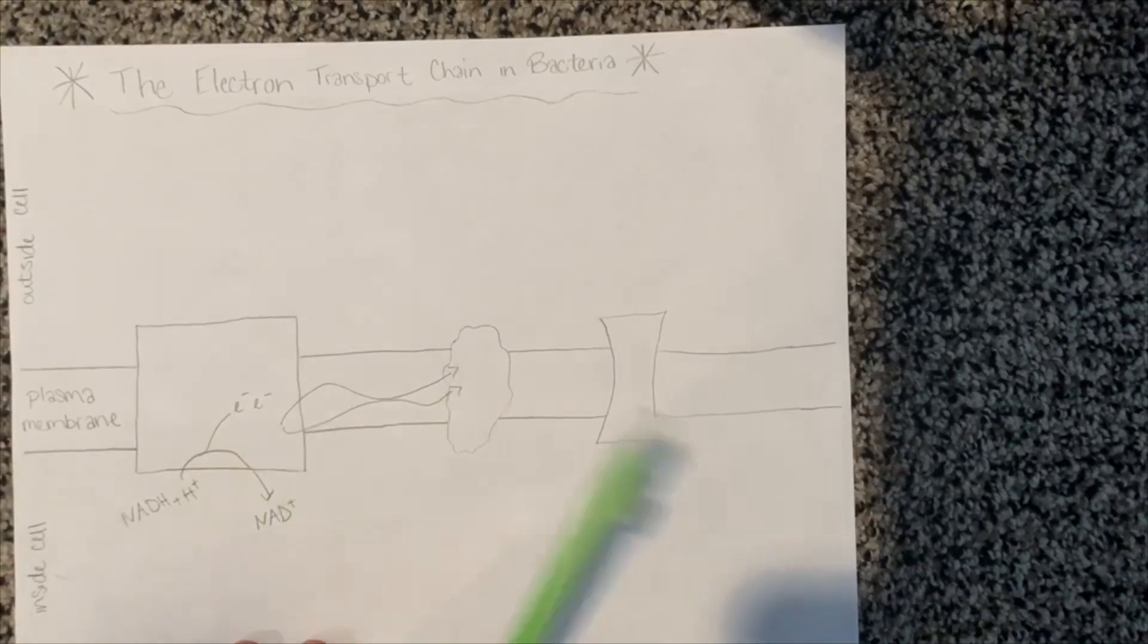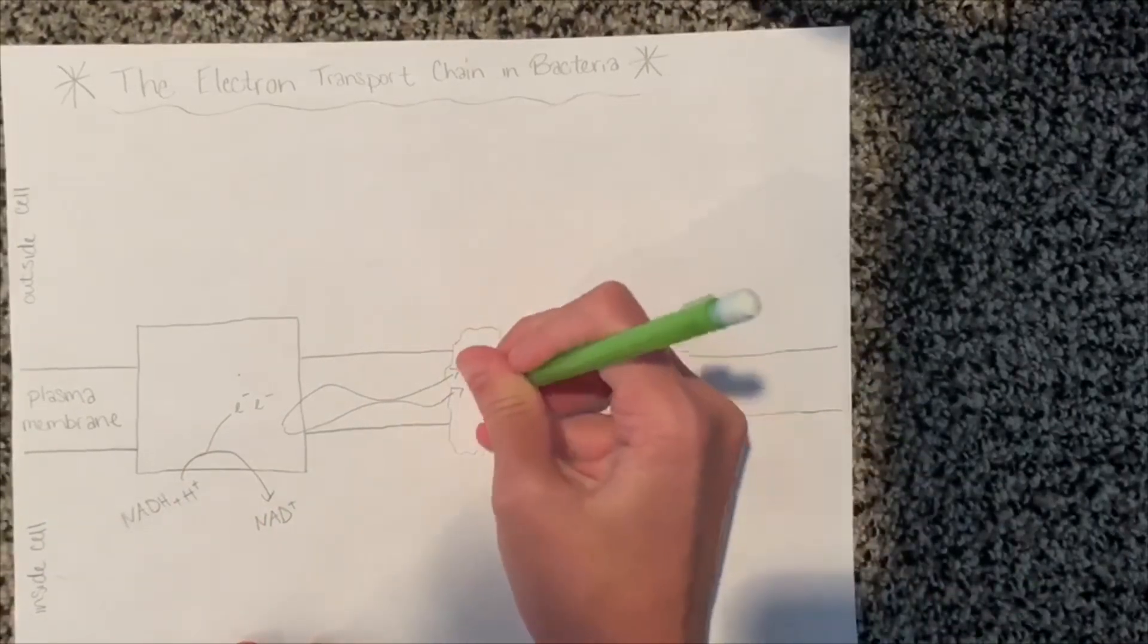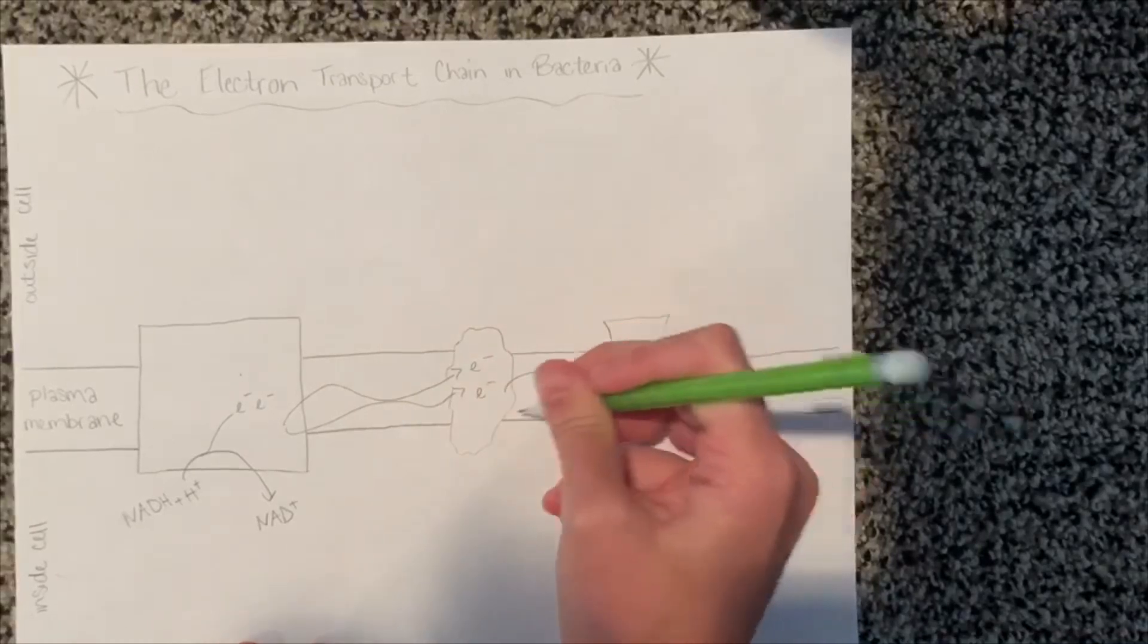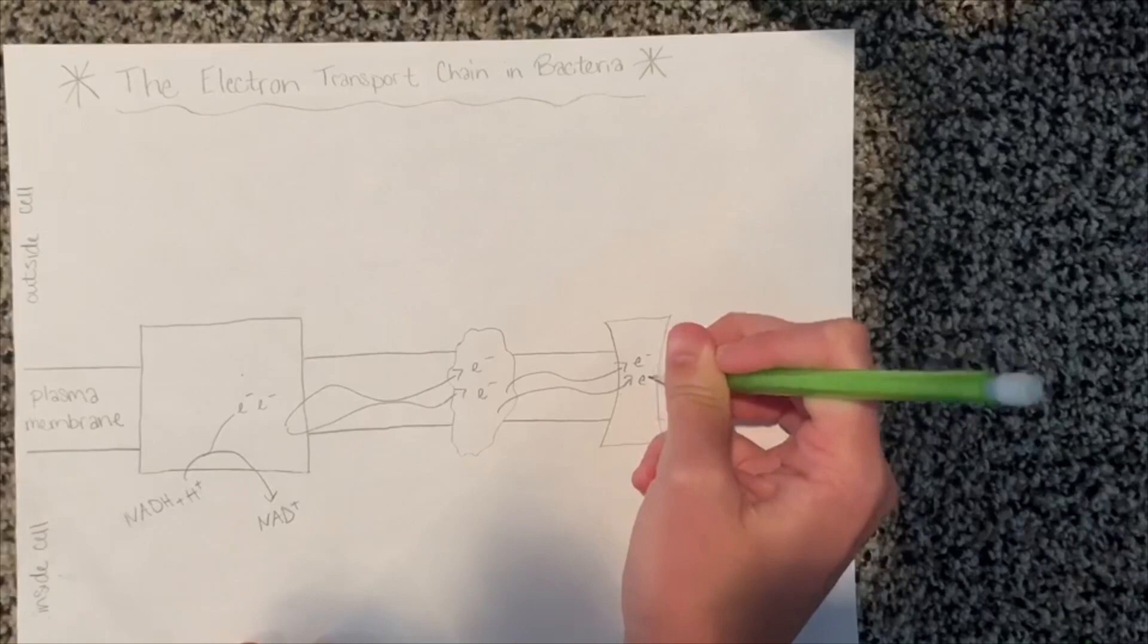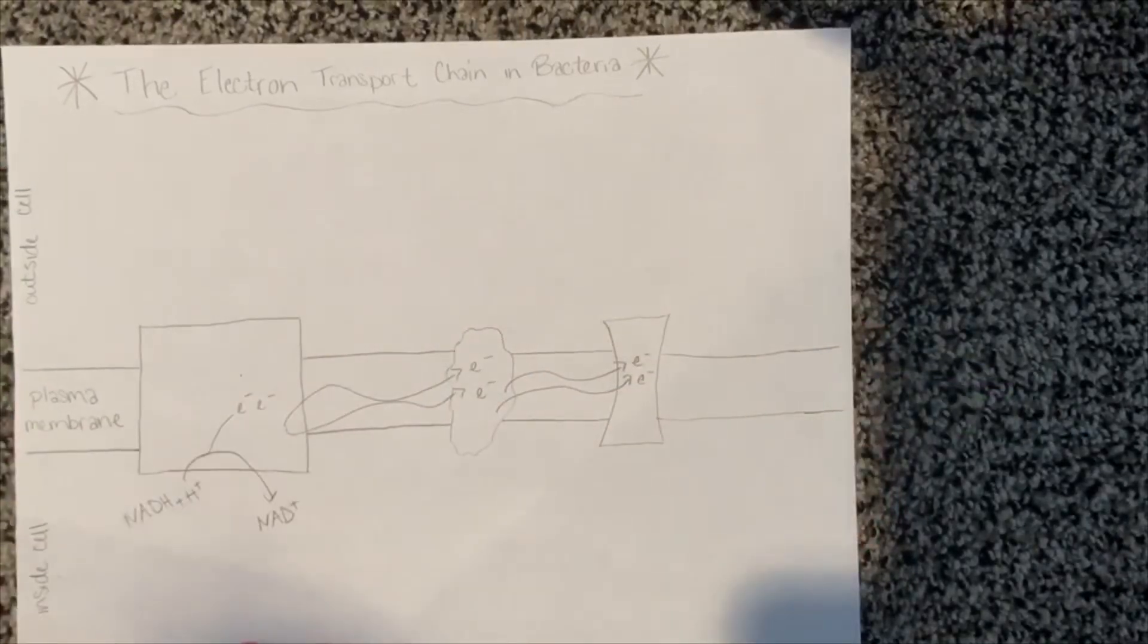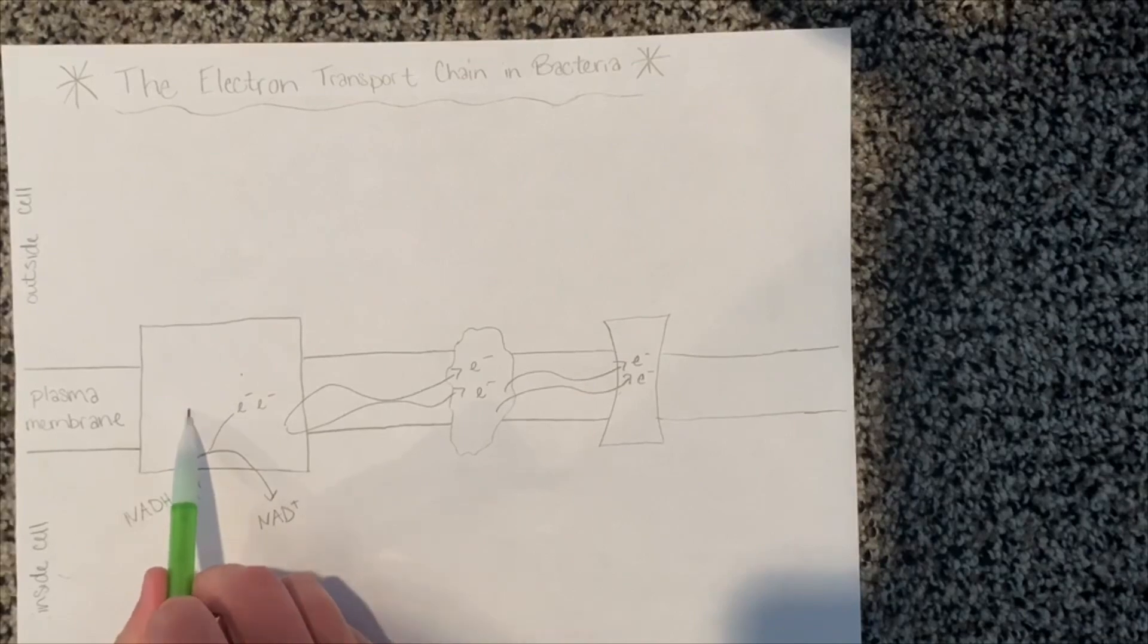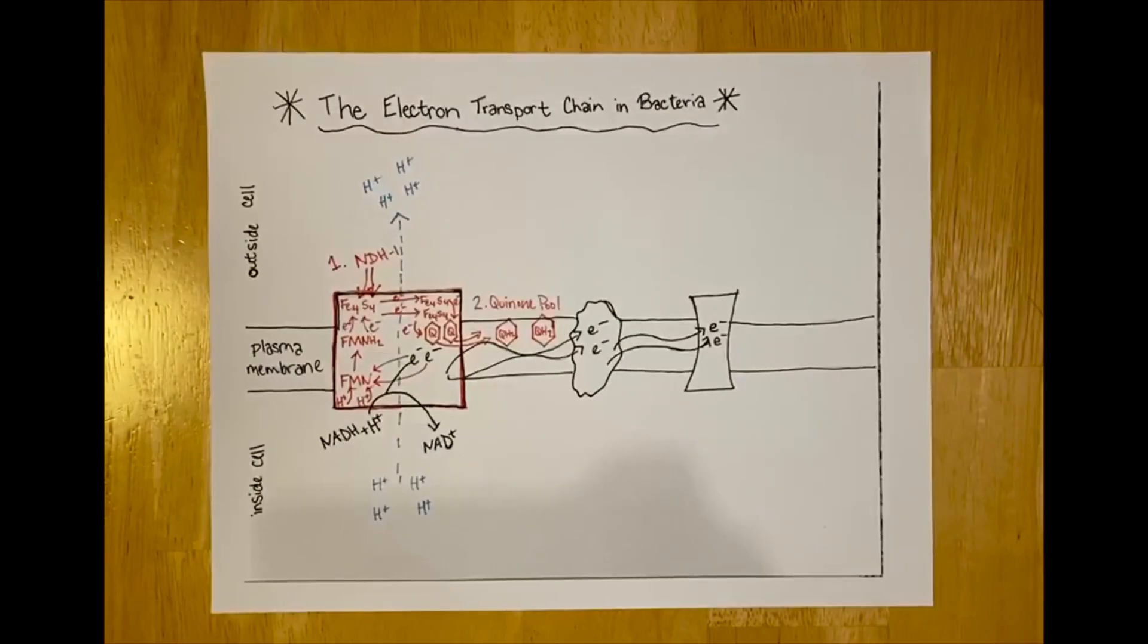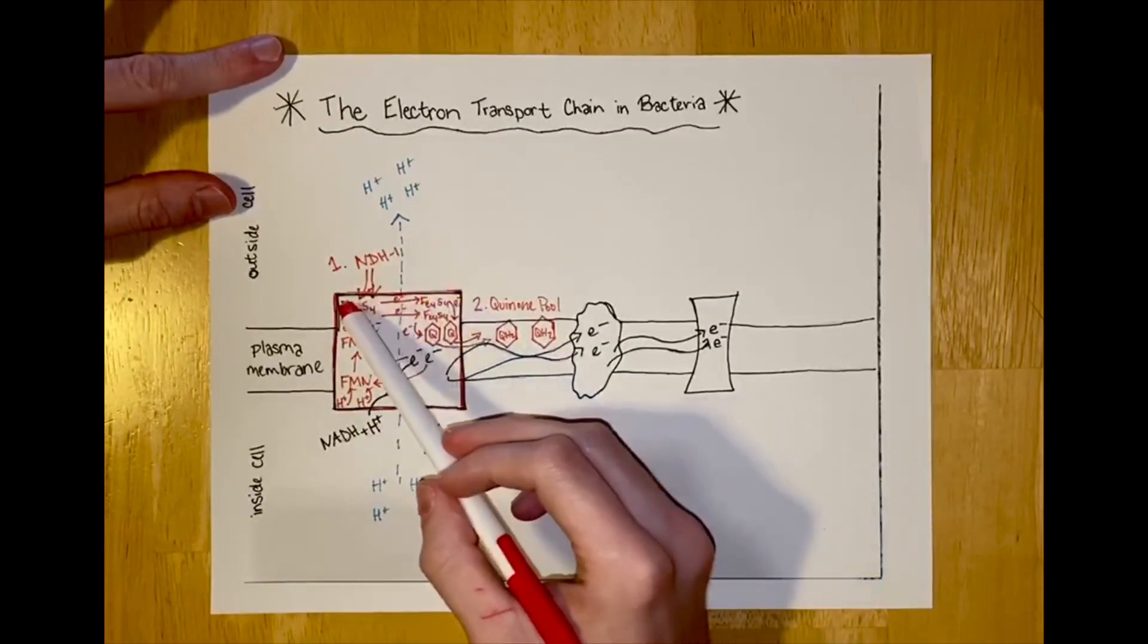The first electron carrier complex is a substrate oxidoreductase called NDH1 in bacteria. So this first electron carrier complex is known as NDH1.